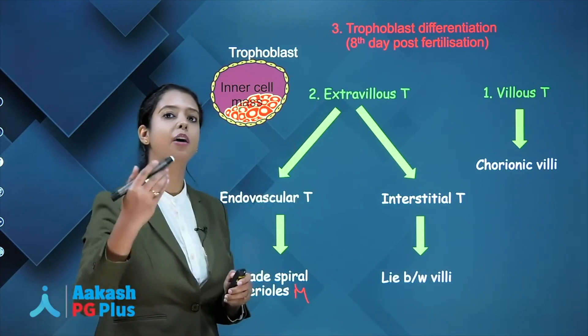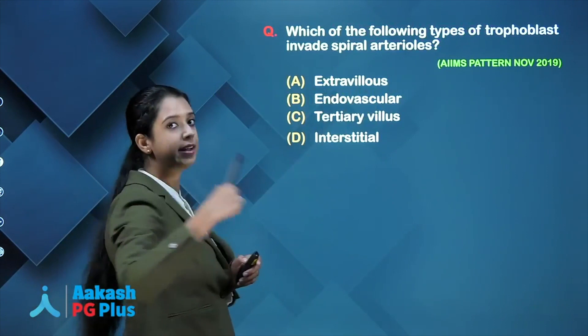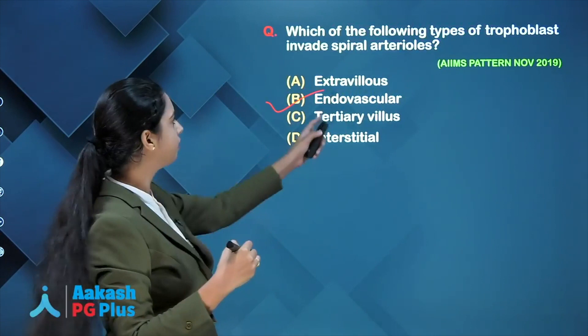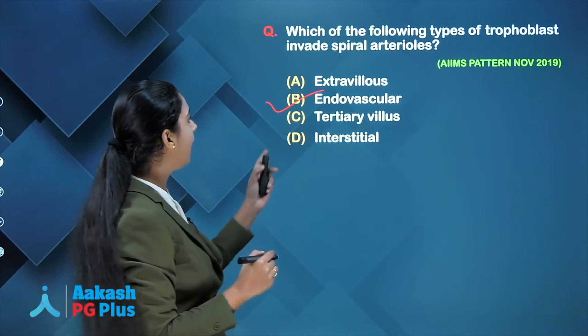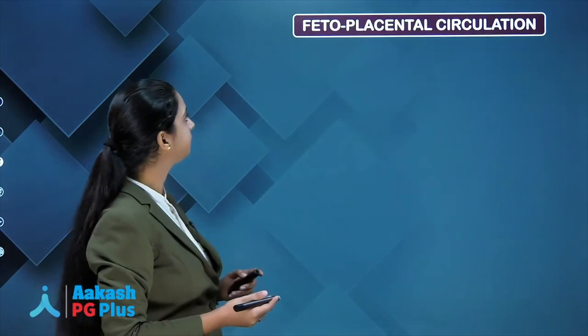To quickly revise: villus trophoblast forms chorionic villi. Extravillus trophoblast includes endovascular trophoblast and interstitial trophoblast. Endovascular trophoblast invades the maternal spiral arteries, and interstitial trophoblast forms the framework lying between the villi. Now let's solve the original question: which type of trophoblast invades spiral arterioles? It is the endovascular trophoblast. Although endovascular trophoblast is a part of extravillus trophoblast, since we have that direct option, that is our answer.